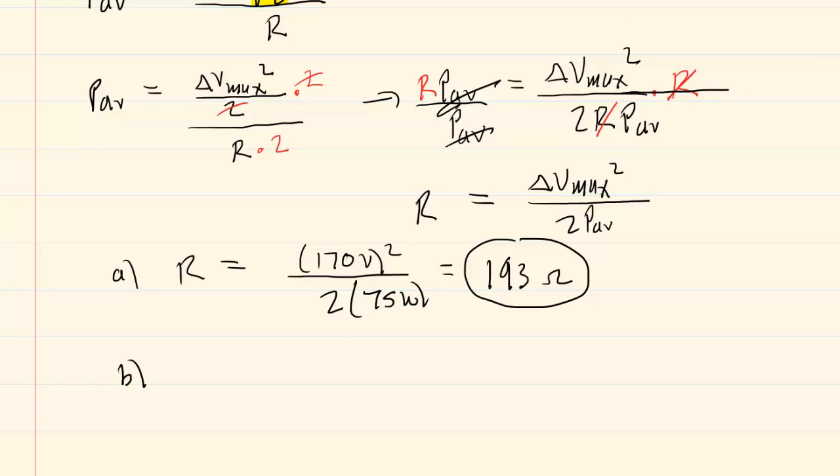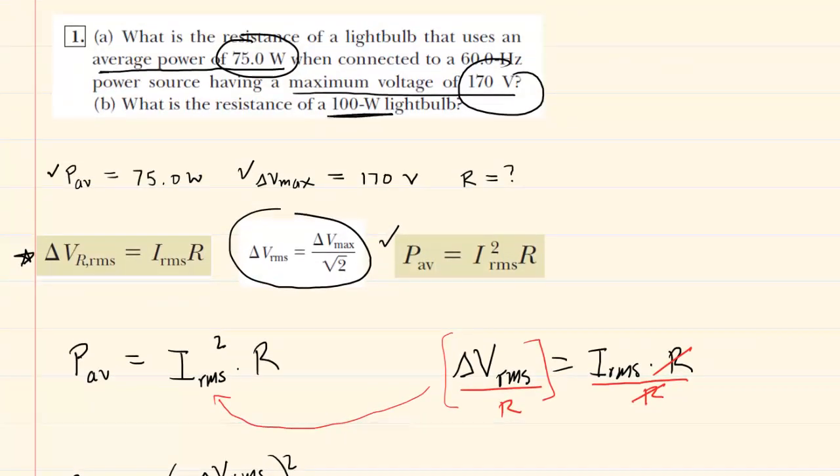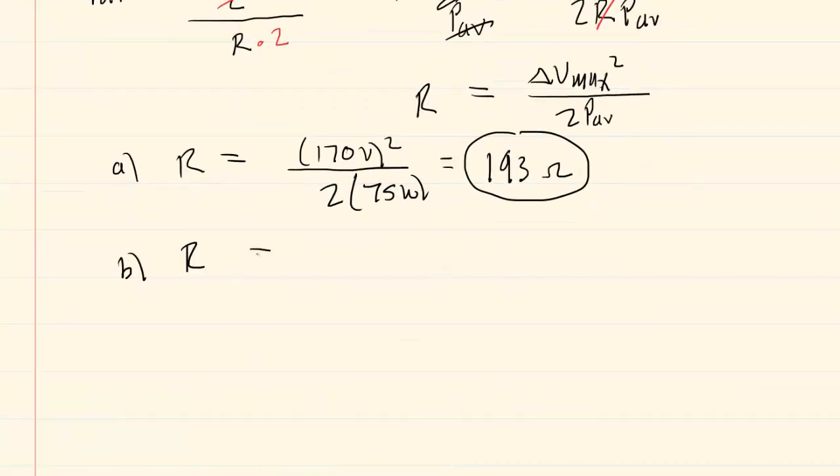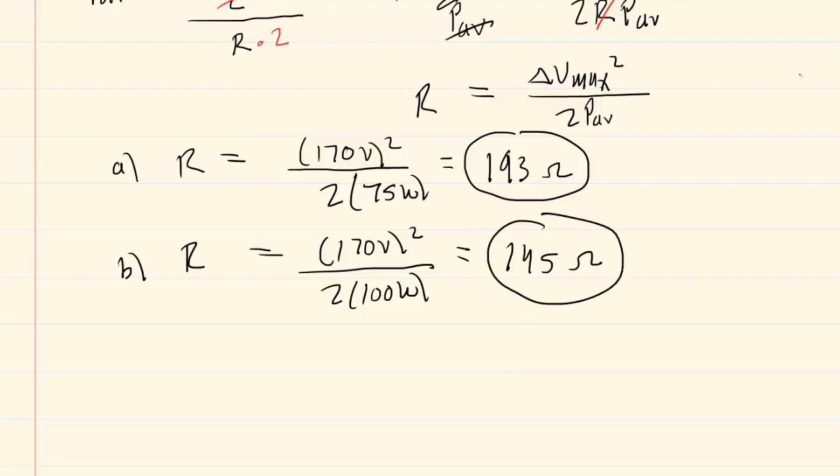For part B, it's very similar, except this time it's 100 watts. So we're just changing the power value. We'll still have 170 volts squared over two times 100 watts. We'll punch this into our calculator, and we'll end up with 145 ohms. So these would be the correct answers to the question.